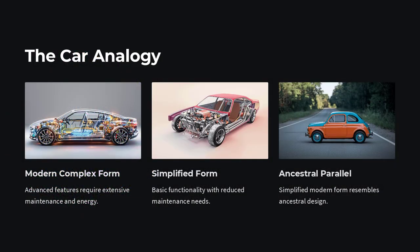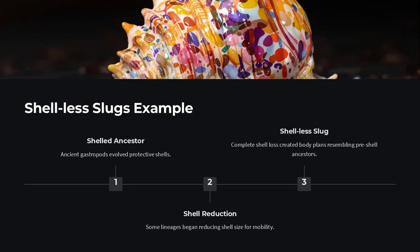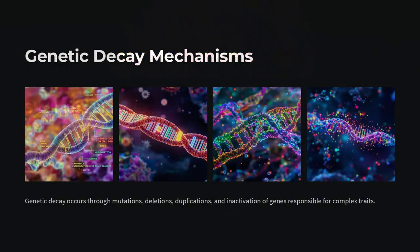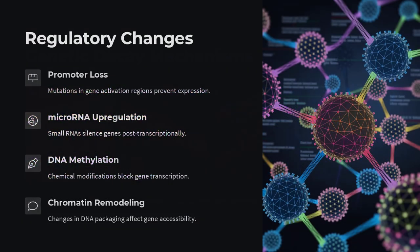Under conditions where a complex feature becomes neutral or even costly — such as eyes in perpetual darkness or limbs in a burrowing worm — genes controlling that feature accumulate disabling mutations without penalty, driving populations towards simpler forms.